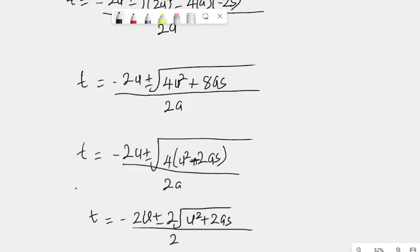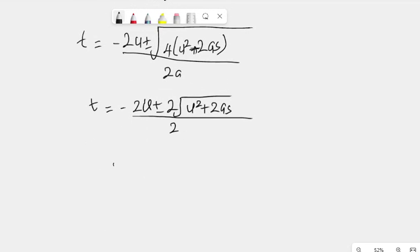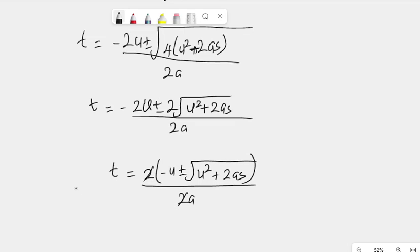Again, 2 is common here, these two here and these two here, so we can factorize it out again, so that T becomes 2 bracket minus U plus or minus root U squared plus 2AS all over 2A. So, these two here, these two can cancel these two.